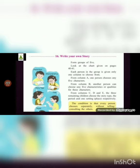Let's start. Form a group of five and look at the chart given on pages 40 and 41. Each person in the group is given only one column to choose from. From column A, one person chooses any five characters. From column B, another person chooses any five qualities for these characters. From columns C, D, and E, the three remaining children choose the story type, time period, and one setting place respectively.